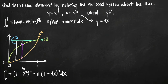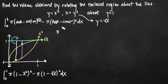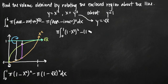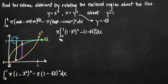Both terms inside the integral are multiplied by pi, which is a constant we can factor outside. This gives us pi times the integral from 0 to 1 of (1 minus x squared) squared minus (1 minus square root of x) squared, dx.